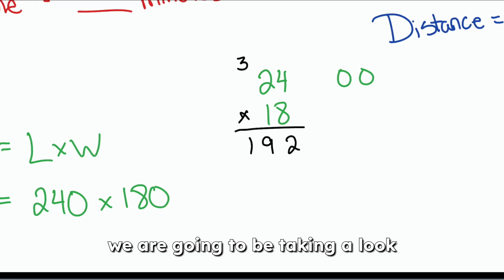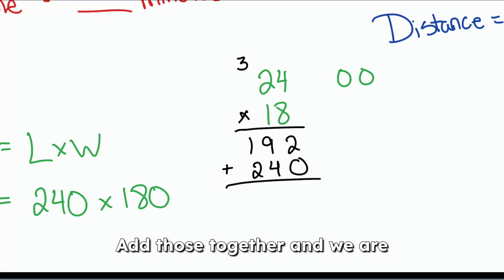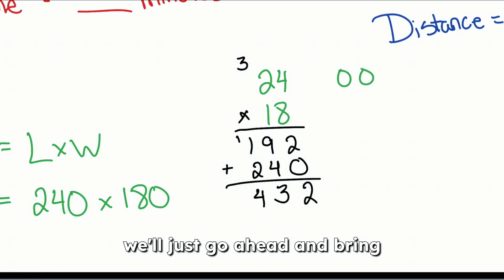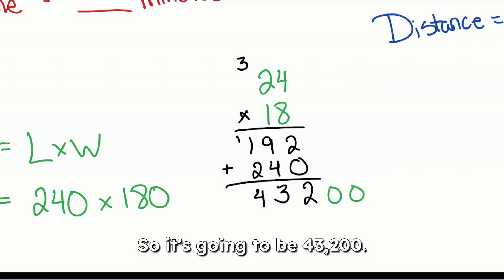Next up, we are going to be taking a look over here at the second row. Put a zero so we can start right here. 4 times 1, 2 times 1. Add those together. And we are going to get 2, 3 for 13, and then 4. And then like I said earlier, we'll just go ahead and bring those zeros back at the bottom. So it's going to be 43,200.